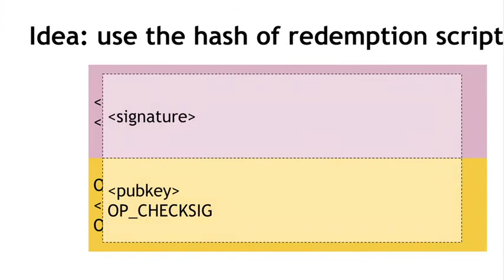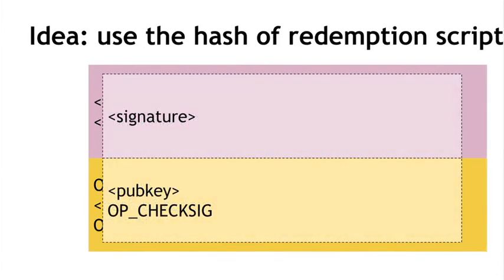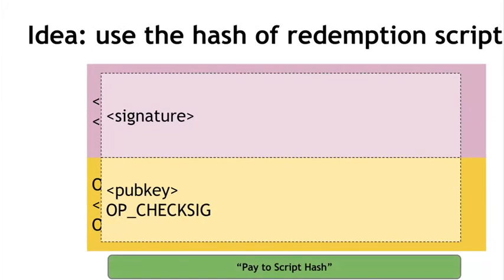But after this happens, a special second step of validation is going to occur, where that top data value from the stack is going to be reinterpreted as instructions and then it's going to be executed a second time as a script. So we see there were two stages that happened here. First there was this traditional script which checked that the redemption script had the right hash and then the redemption script will be deserialized and run as a script itself and here's where the actual signature check is going to happen.